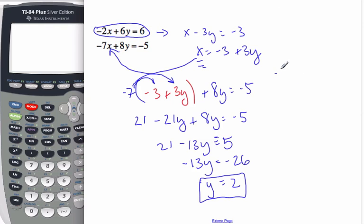So negative 2x plus 6. Substitute in our y, which is times 2. And then equals 6.